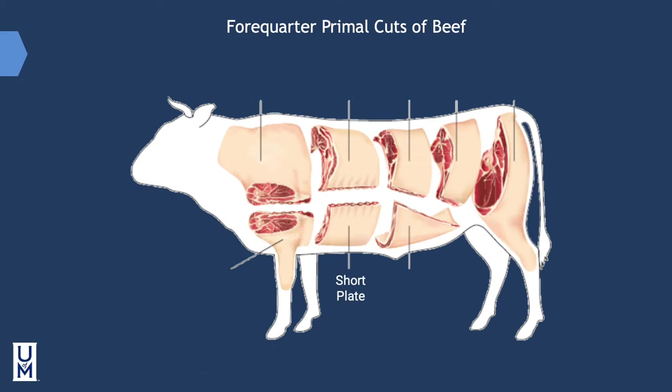The short plate is located directly below the primal rib and accounts for approximately 9% of overall carcass weight. The short plate contains rib bones and cartilage that are the source of short ribs and skirt steak. Beef short ribs are meaty yet high in connective tissue and are best when braised. Skirt steak, which is the animal's diaphragm muscle, is often marinated and grilled as fajitas. Other less meaty portions of the short plate are trimmed and ground for hamburger.